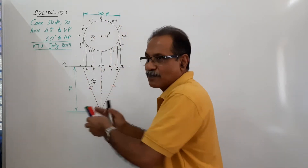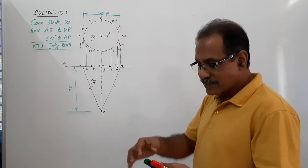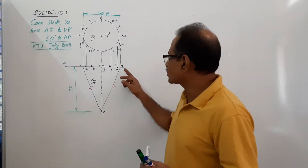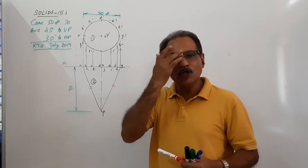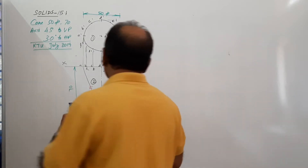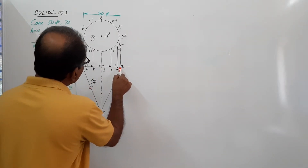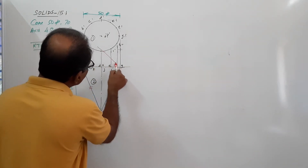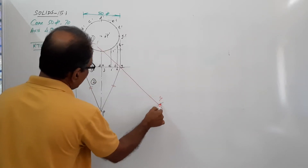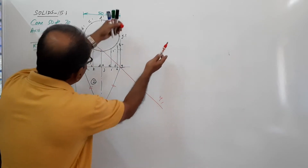First, draw the simple position elevation and plan. Then you have to draw x1y1 in such a way that it passes through G and also makes 45 degrees to the axis. This is the axis — you have to draw x1y1. This is the plan, and this is the new XY. You have to draw a new elevation there.